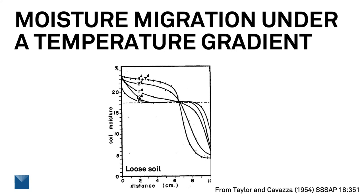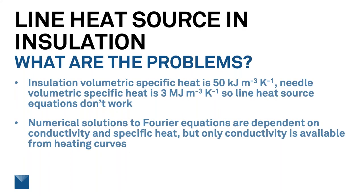Transient methods inject only a short heat pulse to make the measurement, so moisture redistribution is negligible during that short pulse. Now, the equations normally used for the transient line heat source were developed assuming the heat source really is a line that doesn't have any mass or heat capacity. The needle we use in these measurements, of course, has both mass and heat capacity. For denser samples like soil, the needle heat capacity is similar to that of the sample, so the line heat source assumption works. But for insulation, the needle heat capacity can be 60 times that of the insulation, so those simple equations don't work.